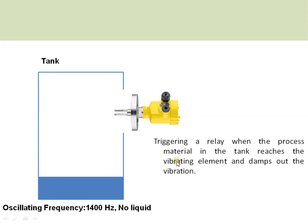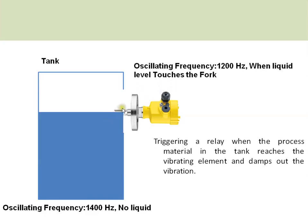As a typical example, this level switch oscillates at a frequency of 1400 Hz in air. Whenever liquid comes into contact with the tuning fork, the frequency of vibration decreases — for example, down to 1200 Hz — depending upon the density of the medium. This decrease in frequency is monitored by the electronic circuit, which then gives a signal to the output.